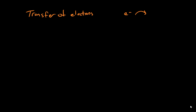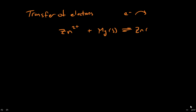A simple example of this would be the reaction between a zinc cation and magnesium solid. This is elemental magnesium reacting with a zinc cation. In this reaction, we exchange electrons and we end up with zinc having a charge of zero as the neutral element and magnesium having a plus two charge.